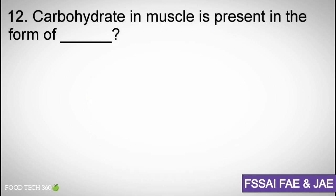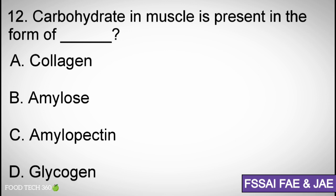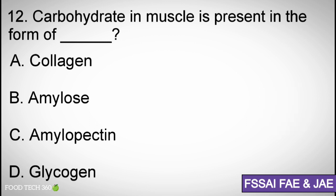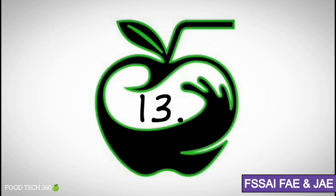Question number 12: Carbohydrate in muscle is present in the form of — A. Collagen, B. Amylose, C. Amylopectin, D. Glycogen. Correct answer: D. Glycogen.